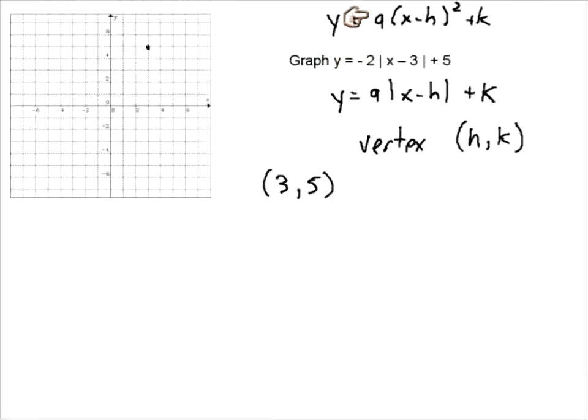Now, before we do this, we can actually look and see. The number in front, remember, the number in front of a quadratic told you whether it expanded. Same thing here. So this 2 is going to tell us that this absolute value has been expanded. And the negative is going to tell you that it opens down.